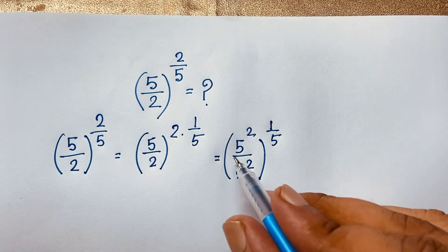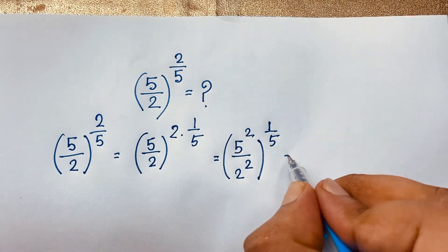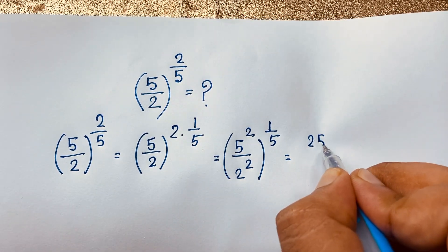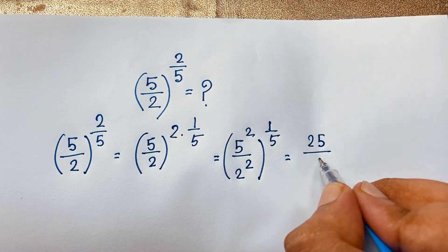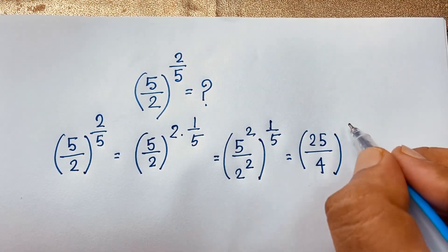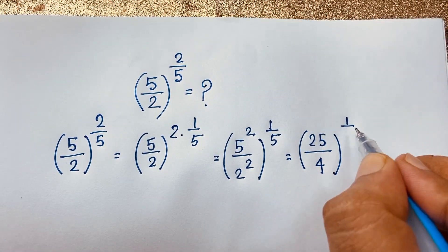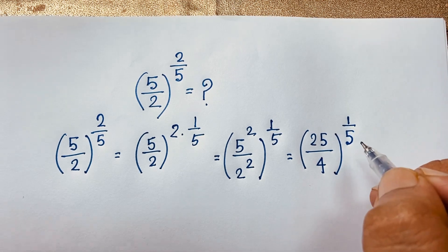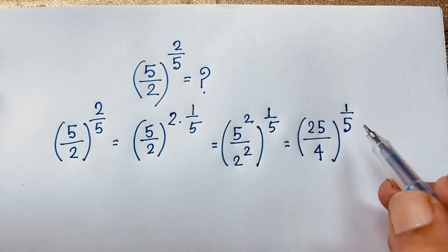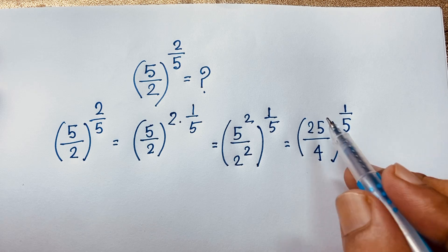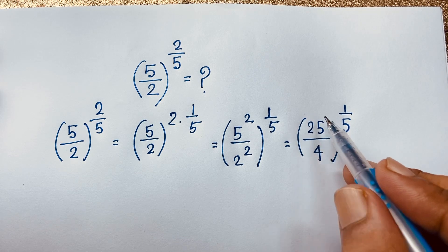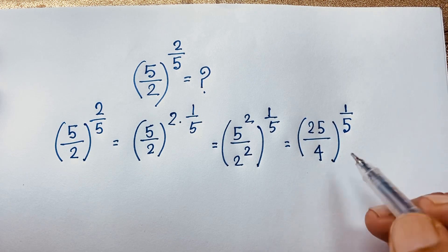Now, this expression will be 5 to the power of 2 — that is 25 — over 2 to the power of 2 — that is 4 — in brackets, with power 1 over 5. If I apply the formula here, it becomes the 5th root of 25 over 4, which we write as 5th root of 25 over 5th root of 4.